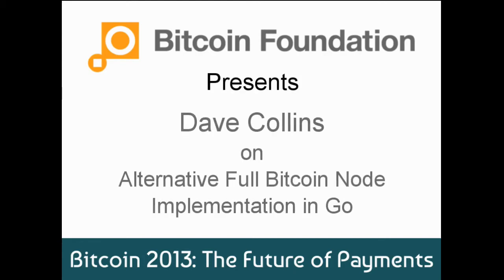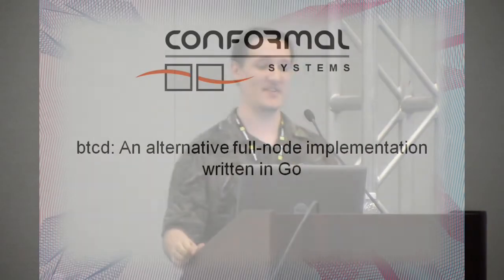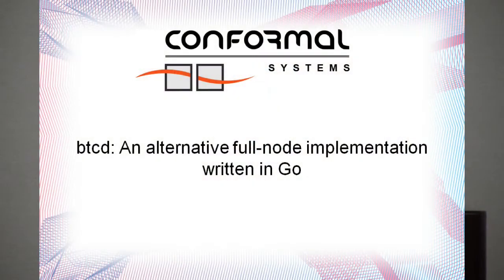Alright, how's everybody doing? Let's get this straight. I'm glad I got such a turnout. I figured being the last speaker, you guys would be tired and sleepy by now, but glad to see you. So the talk I'm going to give today is on BTCD, which is an alternative implementation we are working on at Conformal — basically an alternative to Bitcoin D. It's a fully validating node, and it's written in Go.